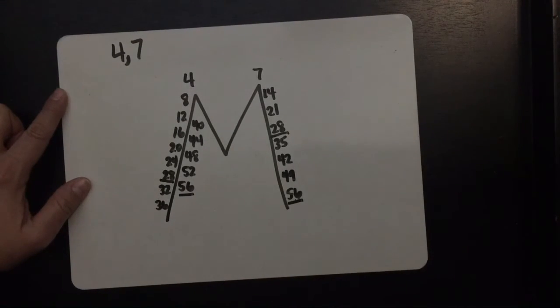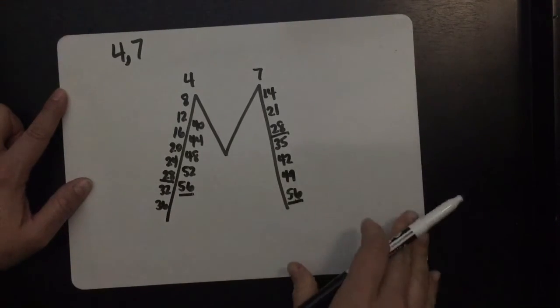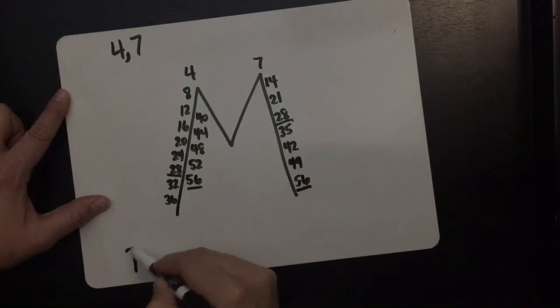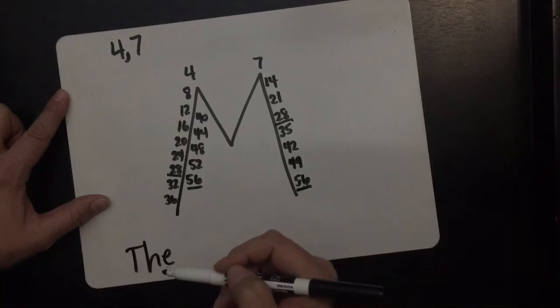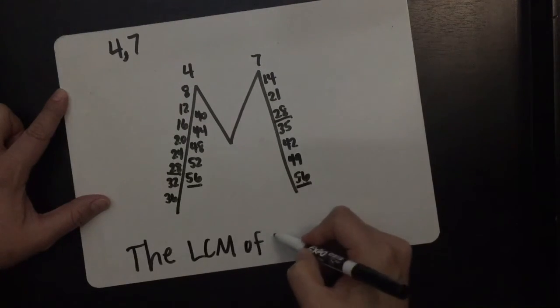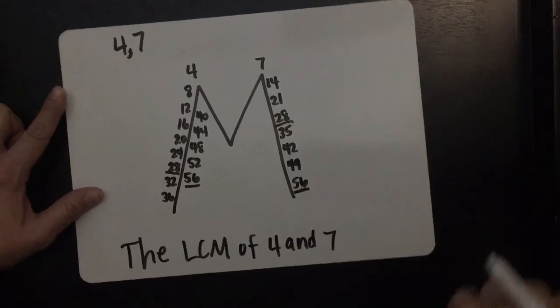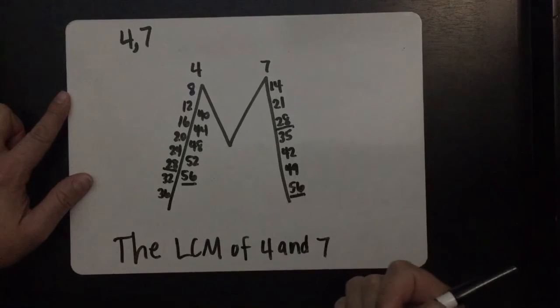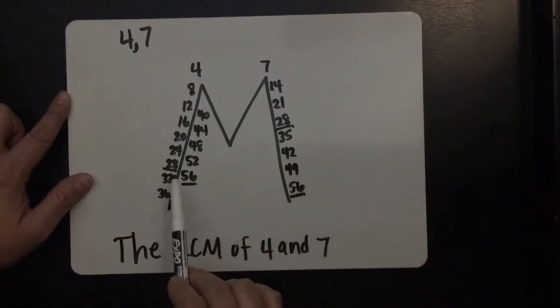Now that means that 28 and 56 are common multiples for 4 and 7. However, sometimes you're going to be asked to find the least common multiple. So the least common multiple of 4 and 7 means that you need to find the smallest multiple that 4 and 7 have in common, and that would be 28.